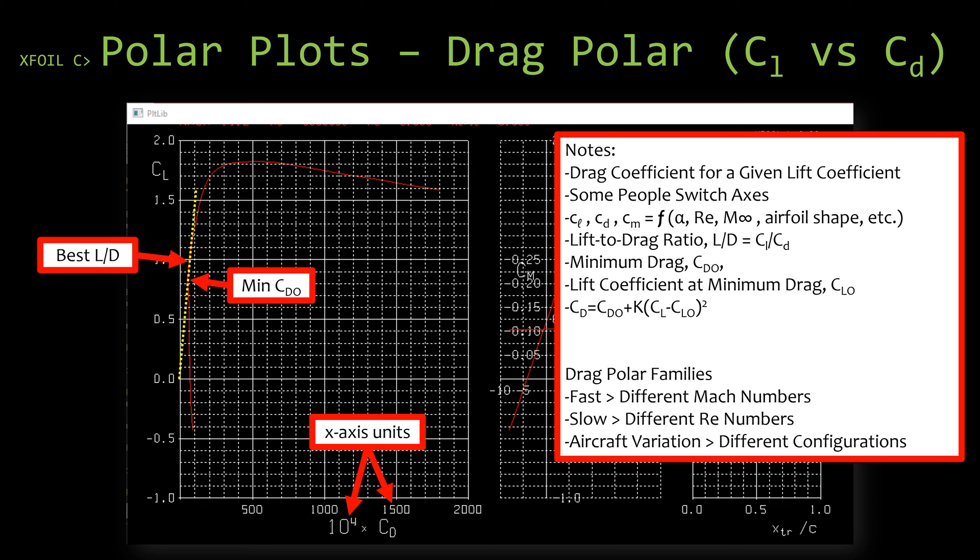The coefficient of lift, coefficient of drag, moment coefficient are functions of alpha, Reynolds number, Mach number, airfoil shape. So it doesn't really matter if the coefficient of lift is the x-axis or the y-axis. While we're on the subject of the axes, pay close attention to the coefficient of drag axis.